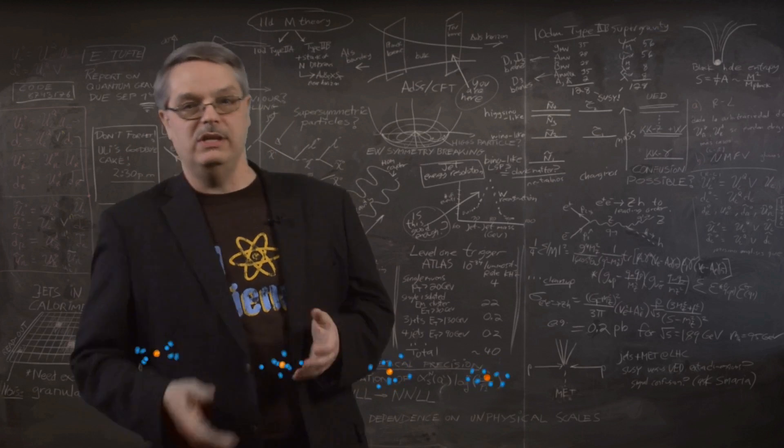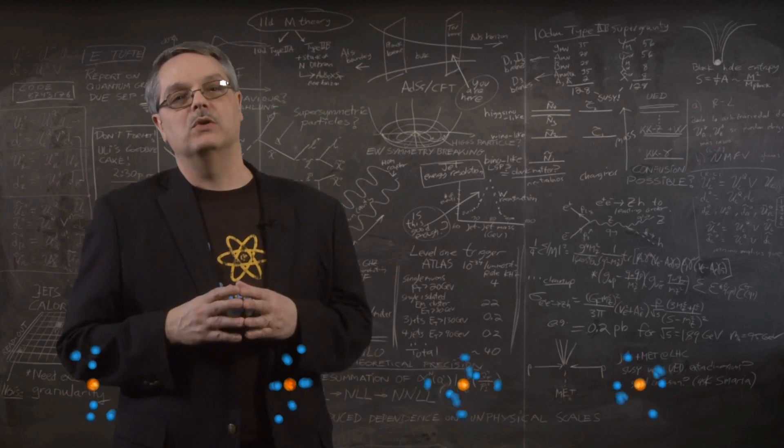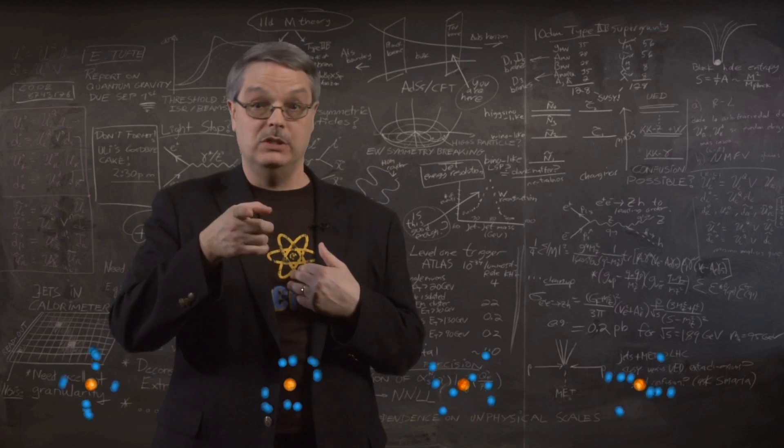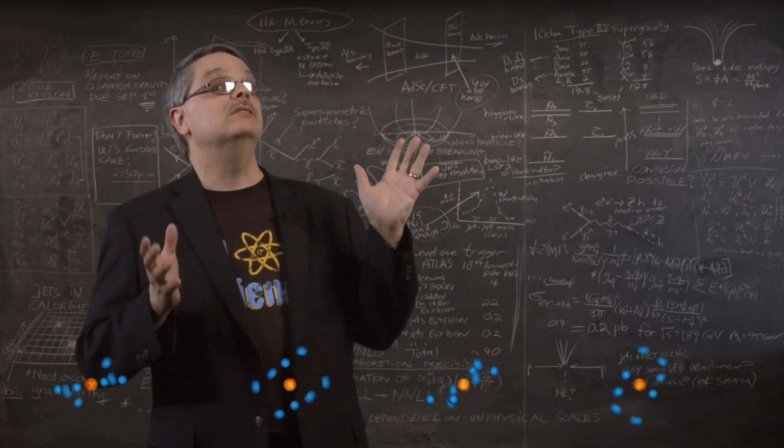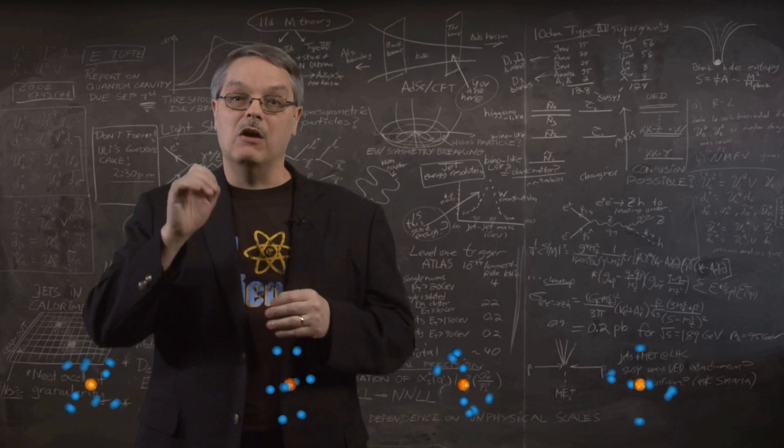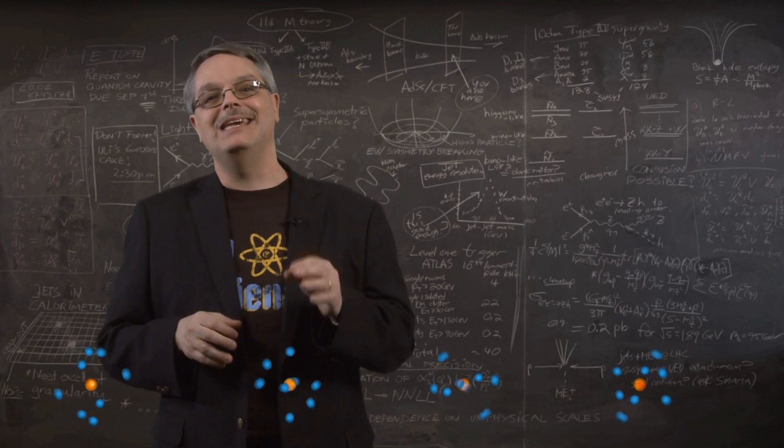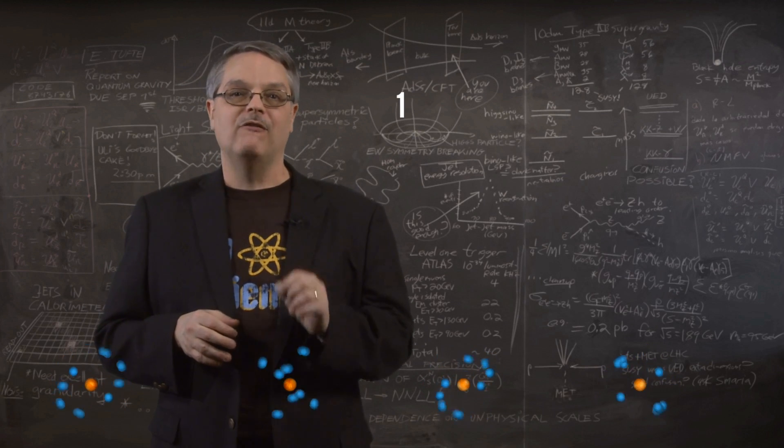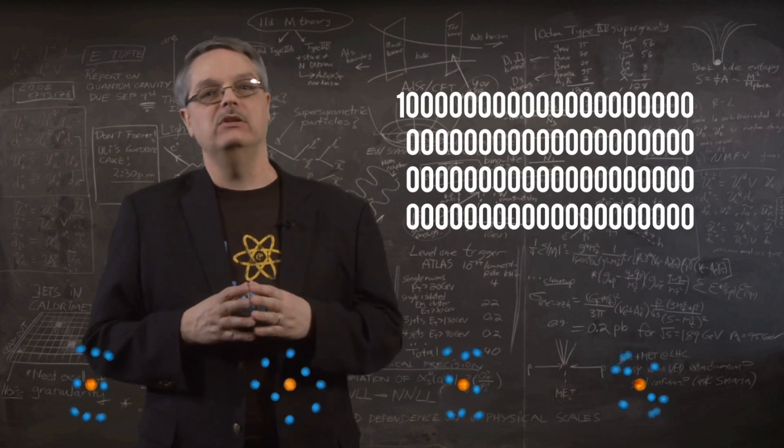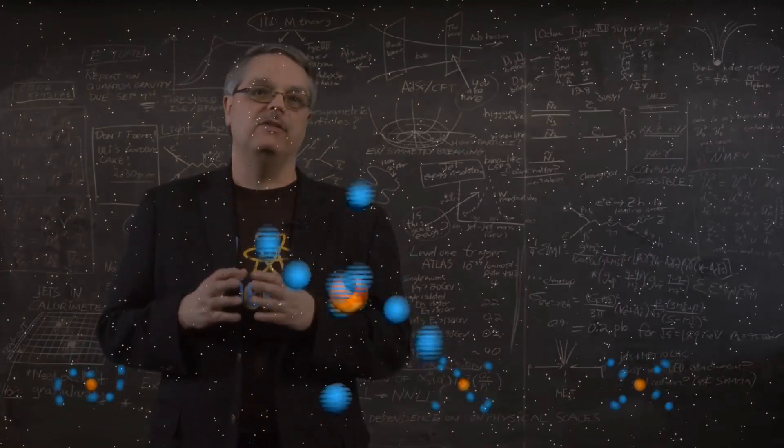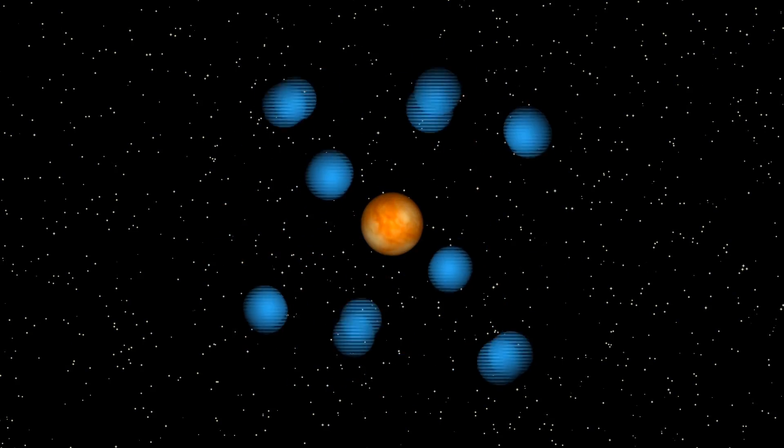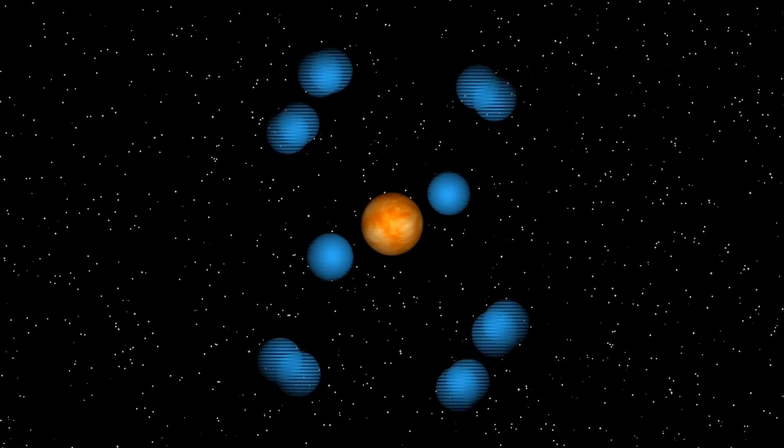Atoms, like the ones you see here, make up all of ordinary matter. From me, to you, to the most distant galaxies. In fact, our best estimates tell us that there are about 10 to the 80—that's a one followed by 80 zeros—of atoms in the universe. They're all basically the same and we understand them very well, using chemistry and nuclear physics.